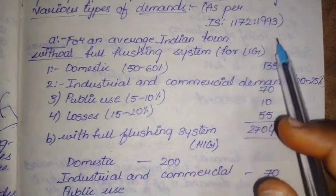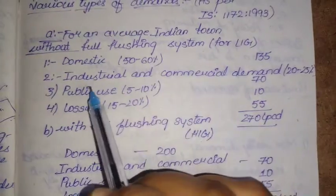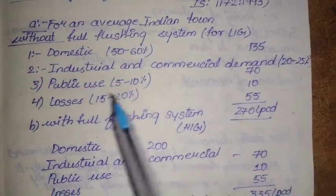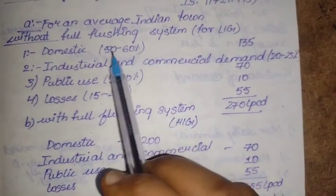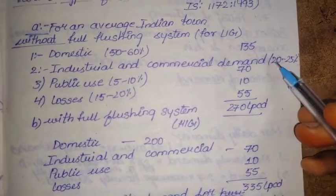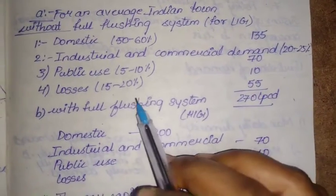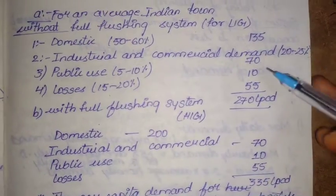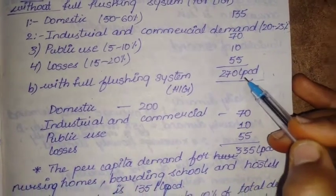For an average Indian town without a full flushing system, that is for Low Income Groups (LIG), we have domestic, industrial and commercial demand, public use, and losses. For domestic purposes, 50 to 60 percent is provided, which equals 135 liters. Industrial and commercial demand is 20 to 25 percent, equal to 70 liters. Public use is 5 to 10 percent, and losses are 15 to 20 percent, giving a total of 270 LPCD.